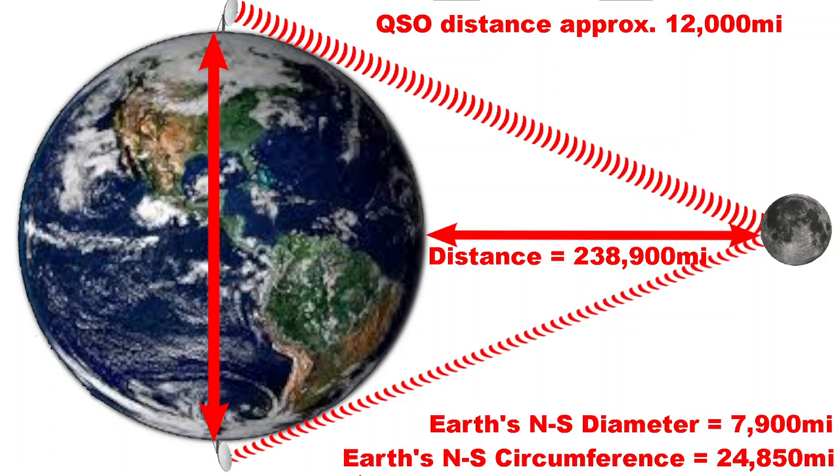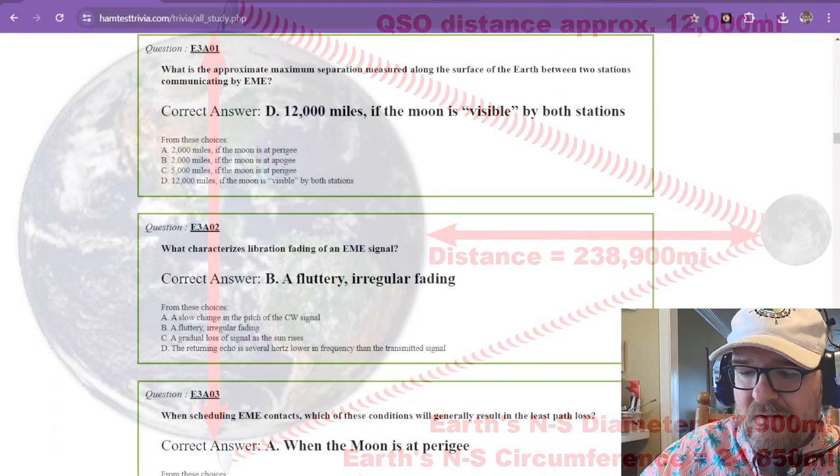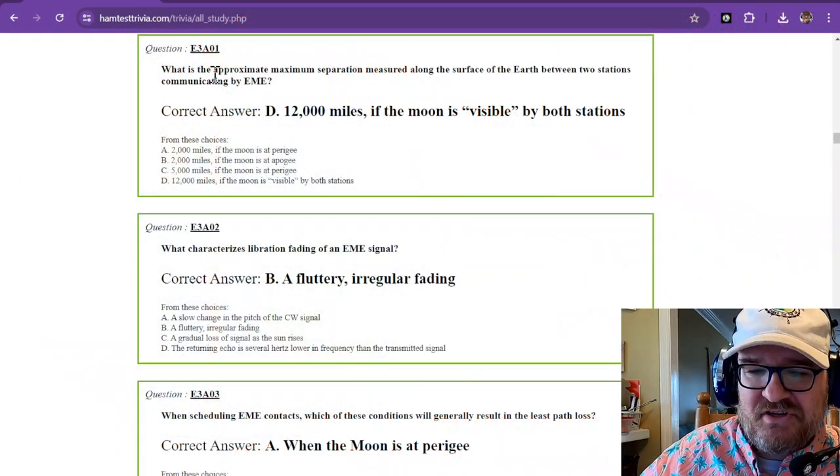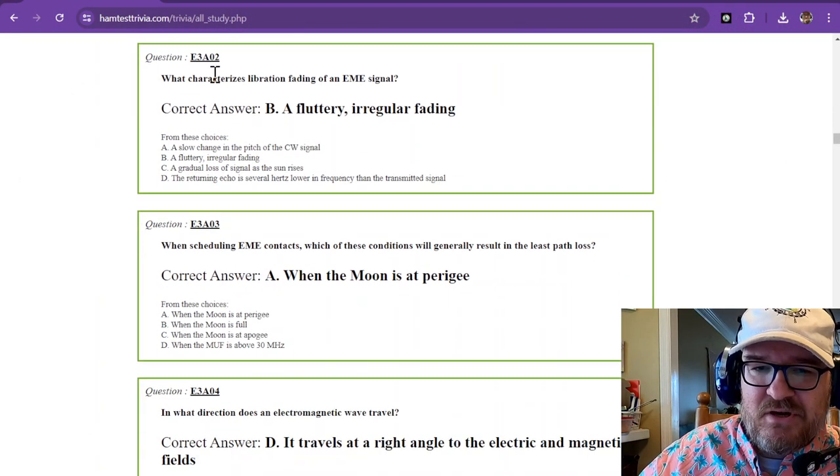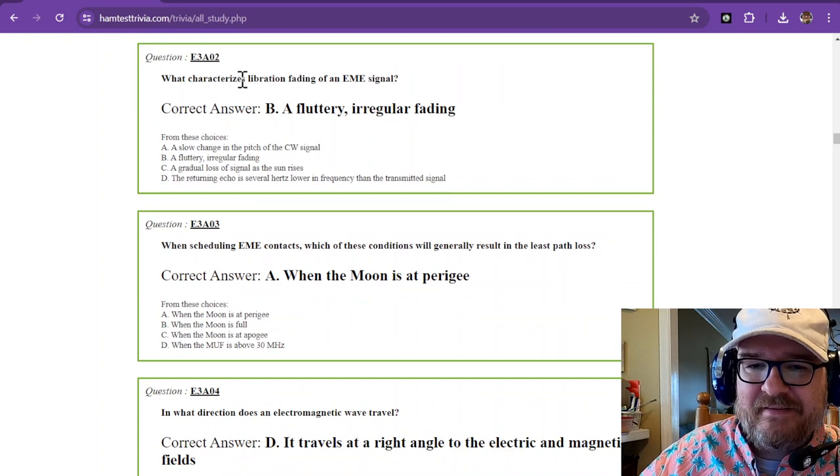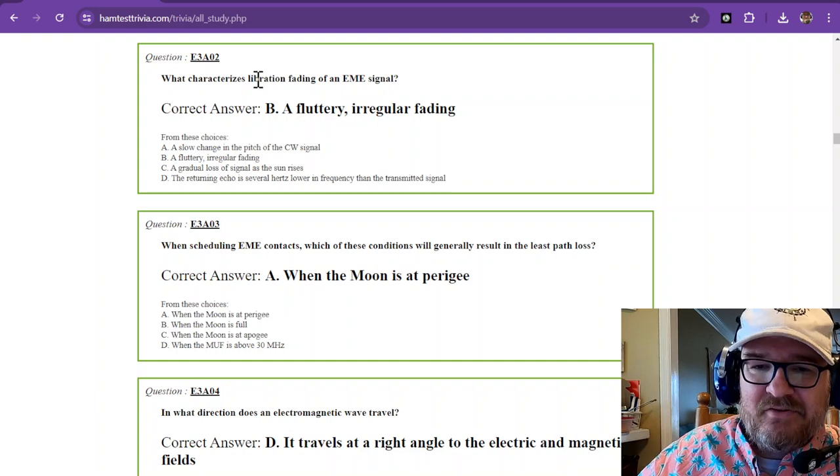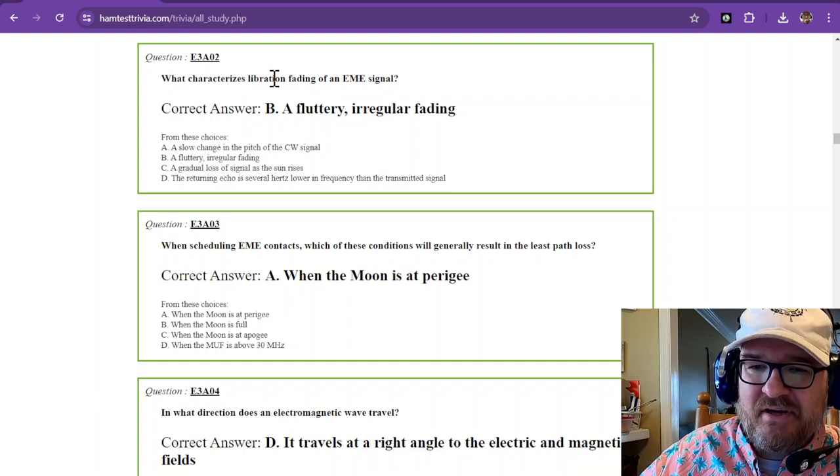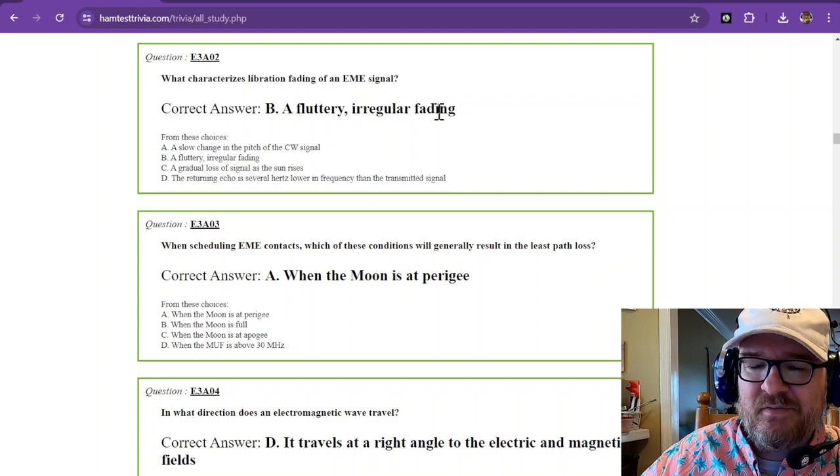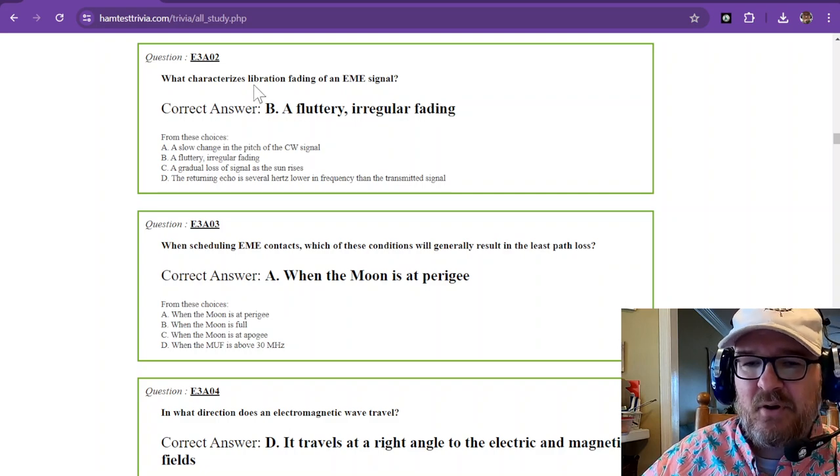So let's go back to the test now. That takes care of question number one. Question number two, what characterizes libration fading of an EME signal? Now, just think of it as libration as vibration, a fluttery, irregular fading. That is libration.